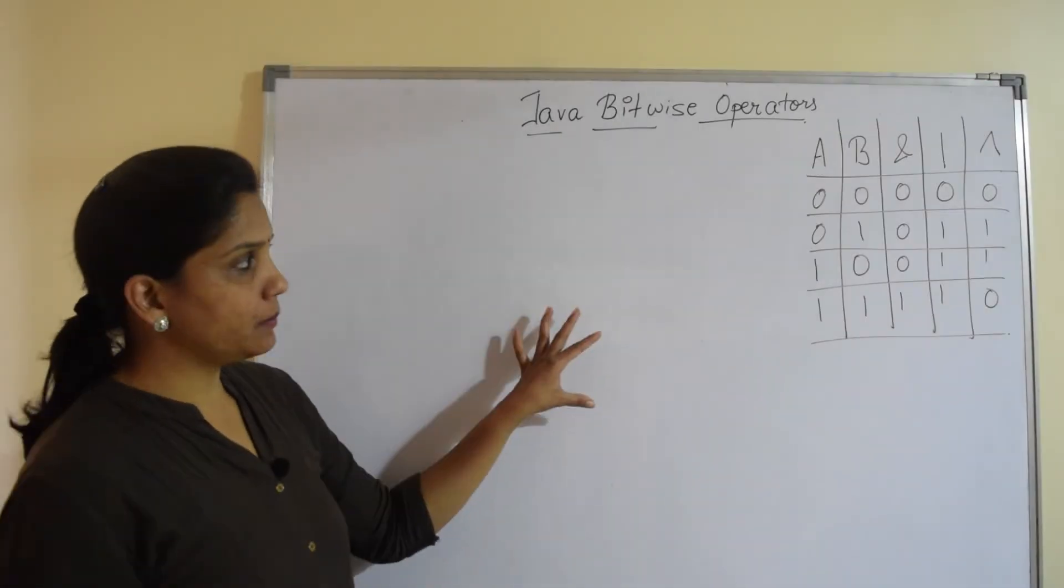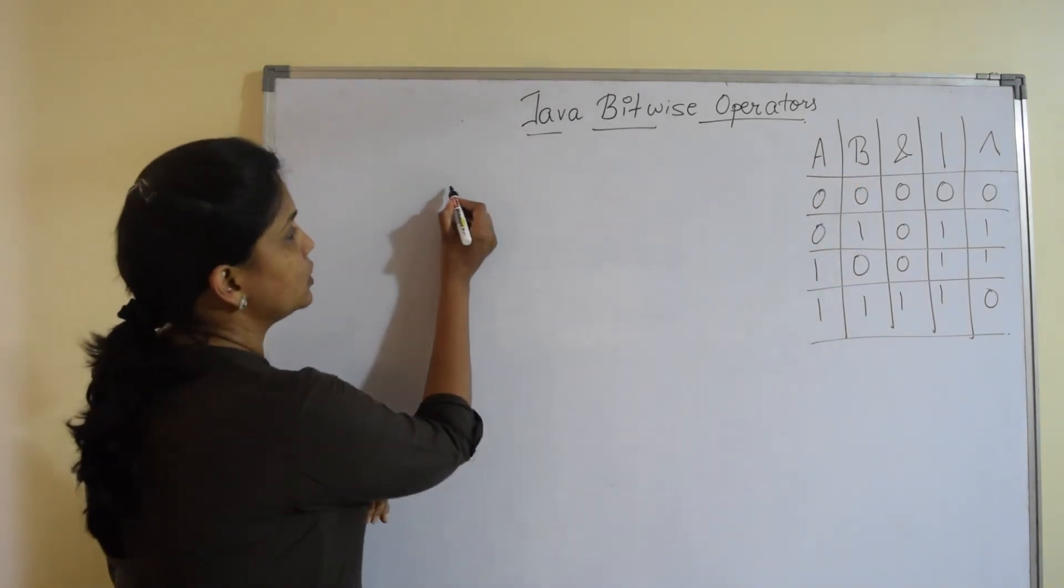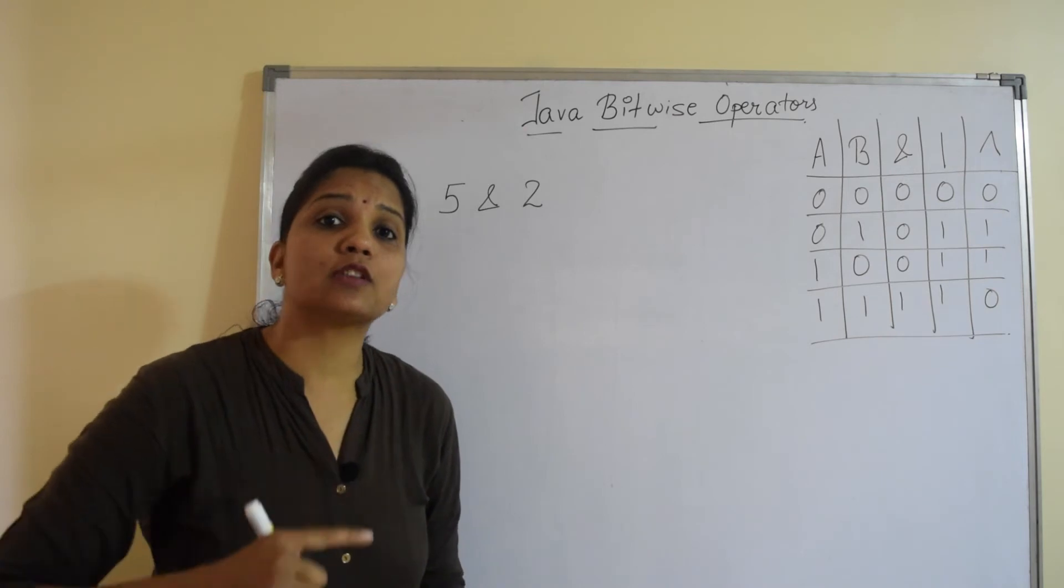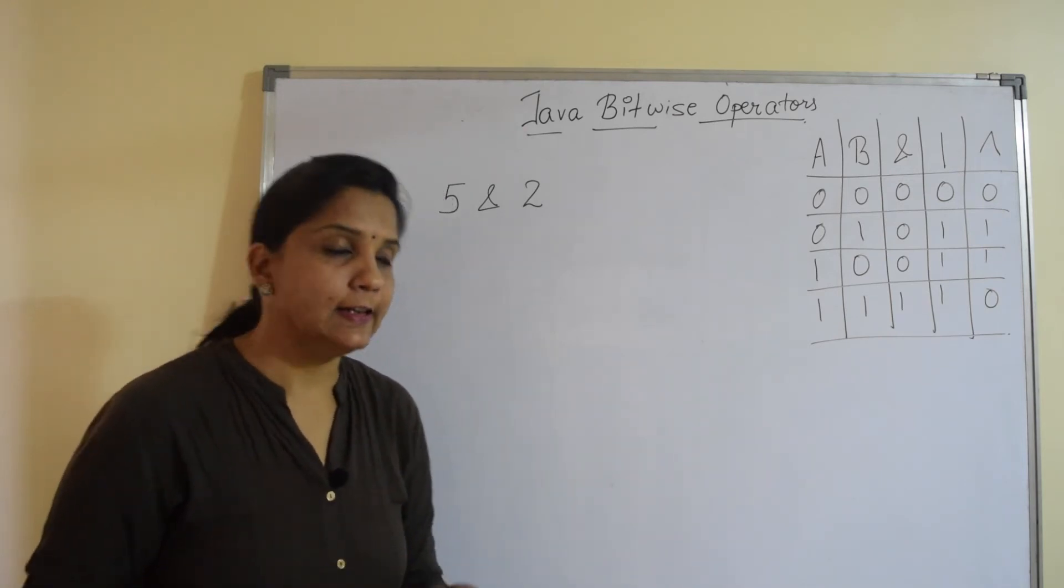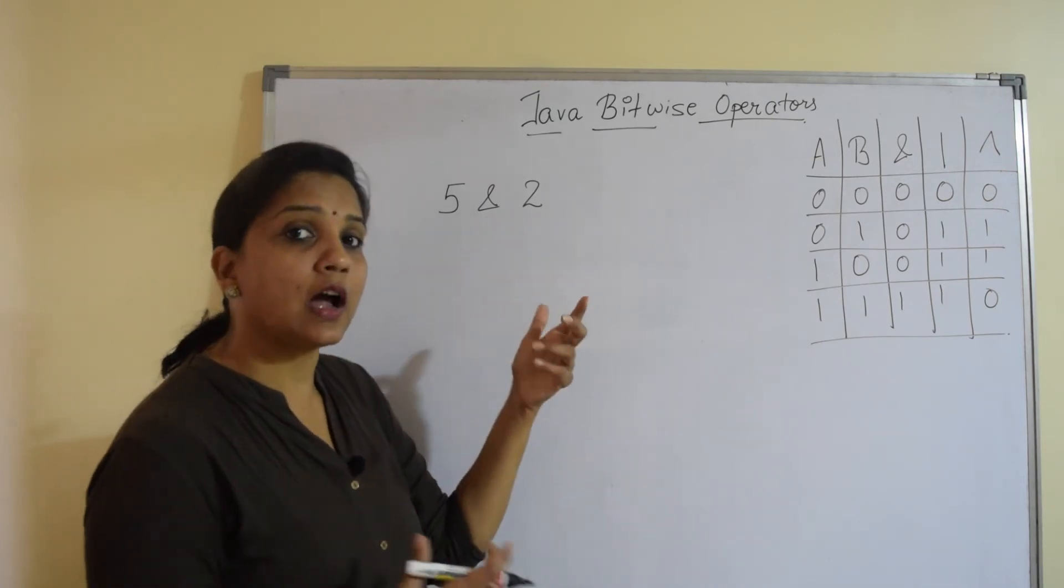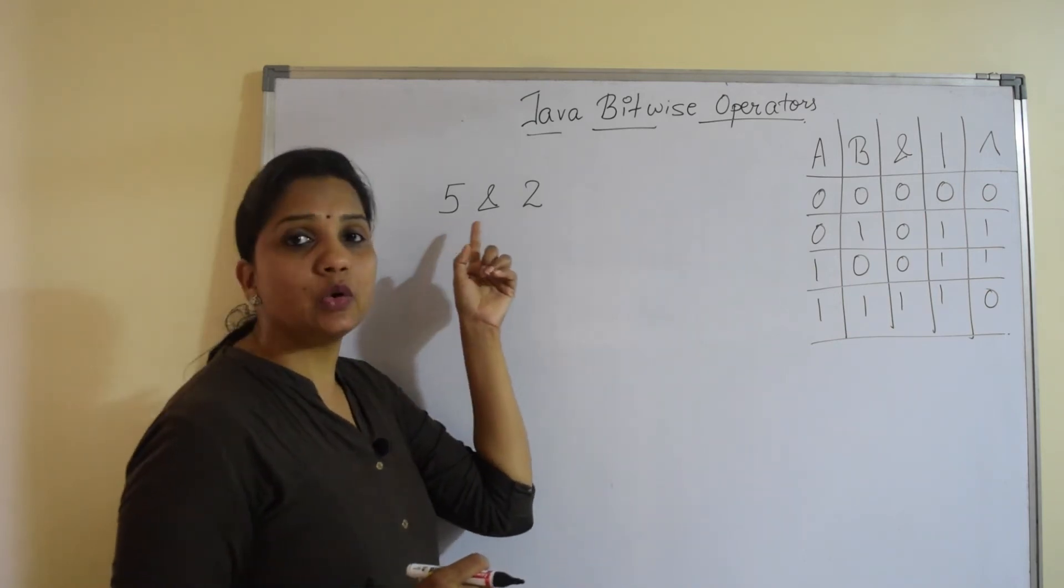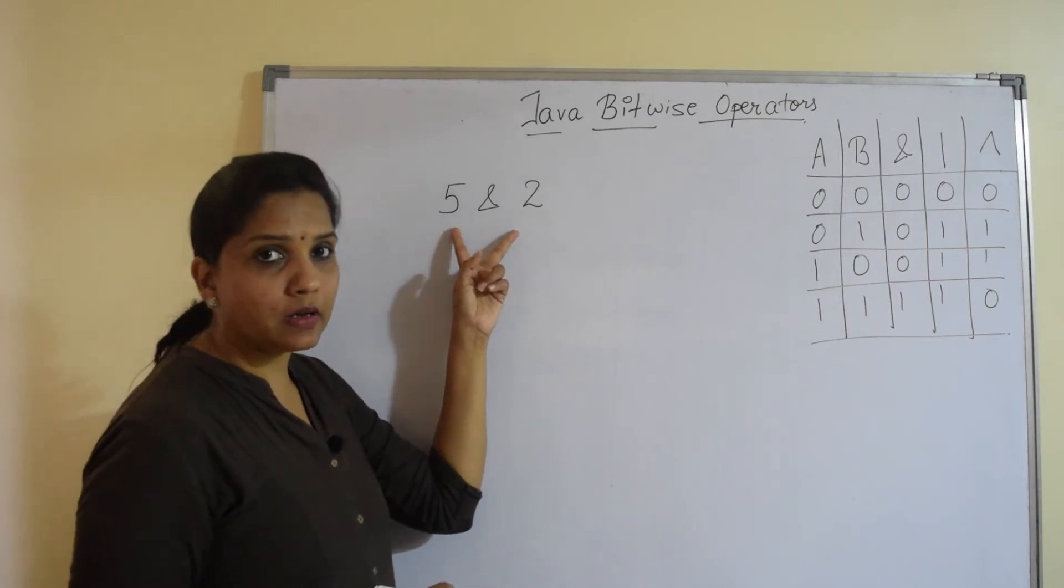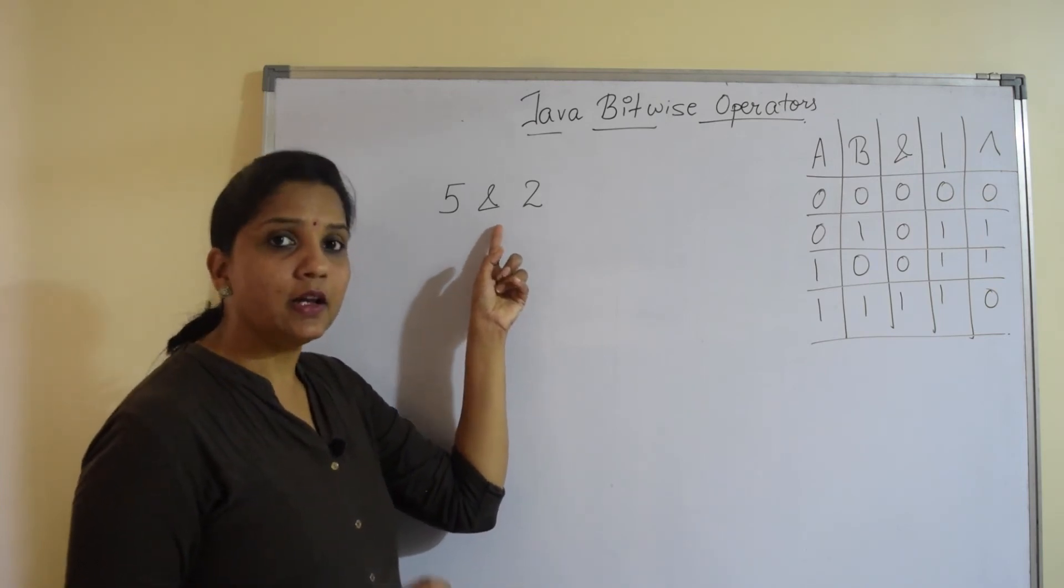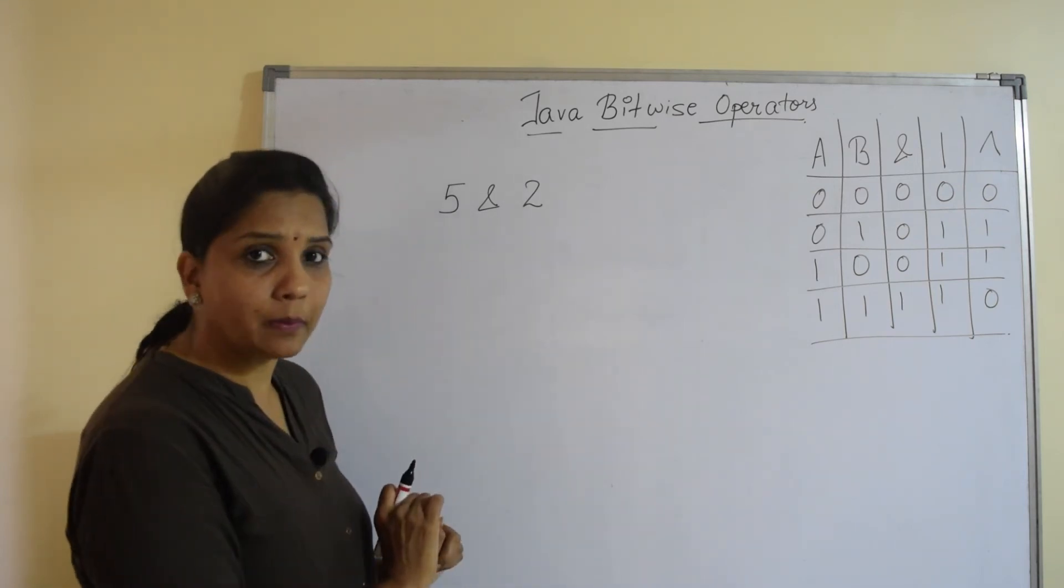Now I have created the same truth table over here. Follow this truth table and let's see. Suppose I have numbers 5 and 2. Now remember logical operators work on boolean values and return boolean values. Bitwise operators, you would say that AND and OR are same for logical and bitwise. It all depends on the input values that you are giving. If I am giving 2 numbers, they are not boolean expressions or boolean values.